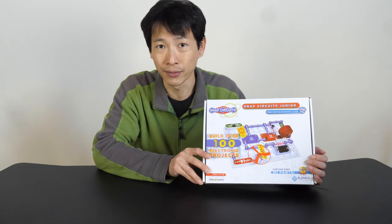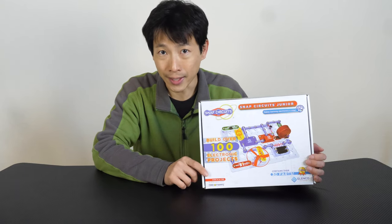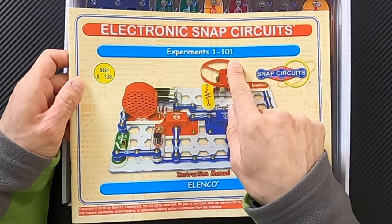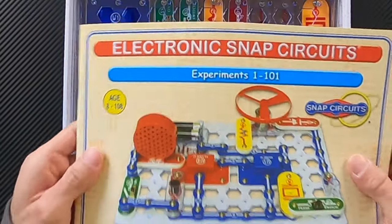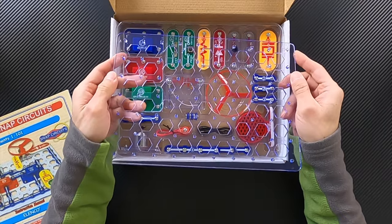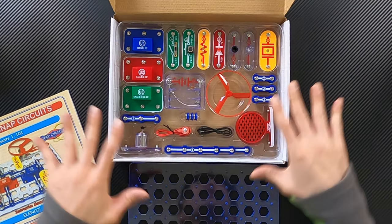I'll leave an Amazon affiliate link for this particular one down in the video description below. With that said let's just open this up. Experiments 1 to 101, the 300 version has a second book. The first book looks exactly like this. The 300 version also has a grid that is exactly the same size it just has fewer of these components.